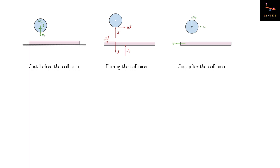Now look at the system ball plus plank. There is no external impulse in the horizontal direction; J and mu·J are internal impulses for the system. Hence, the linear momentum in the horizontal direction of the system ball plus plank is conserved. The ball had zero horizontal momentum because its velocity was downwards, and the plank was stationary. So zero equals m·u plus capital M into minus v. If we apply the linear impulse-momentum theorem to the plank in the horizontal direction, taking rightwards positive, we get minus mu·J equal to capital M into minus v. If we apply the linear impulse-momentum theorem in the vertical direction, we get upward impulse J0 plus downward impulse minus J equals zero, because in the vertical direction the plank does not change its momentum — it remains zero.